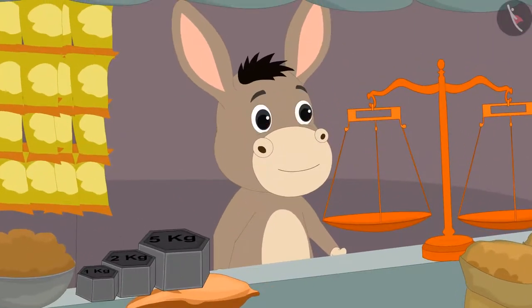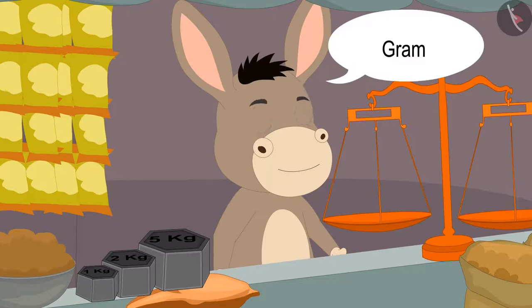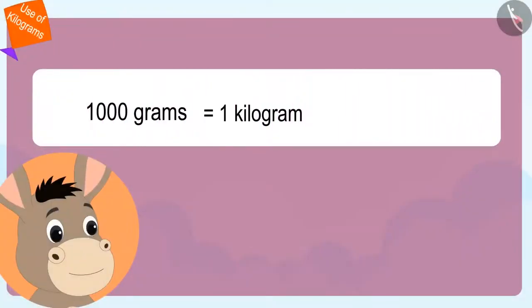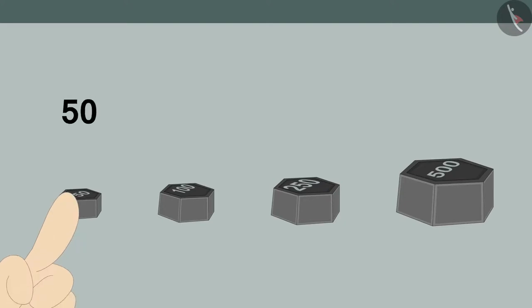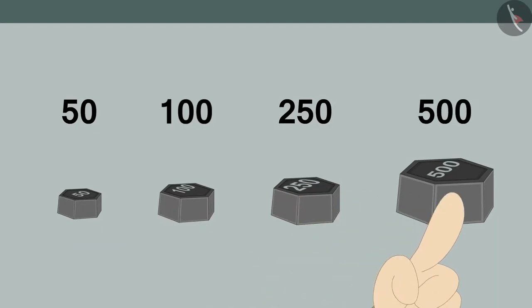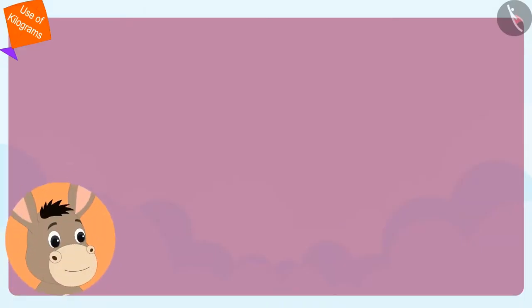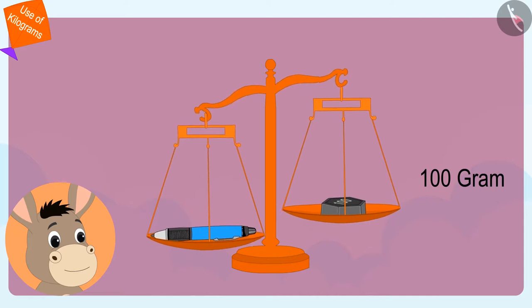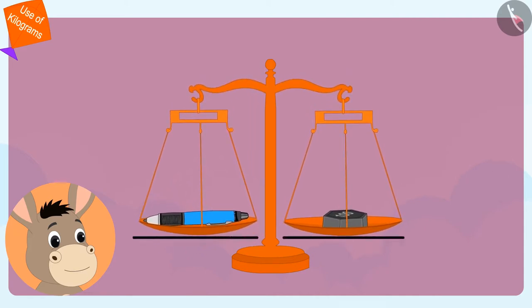Then Bhola told him that if he had to measure the weight of objects weighing less than 1 kg, he could measure the weight of those items using grams. 1 kg is equal to 1000 grams. Bhola showed Appu 50, 100, 250 and 500 grams weights. Then he took the scales from Appu and placed a pen on one side of the scale and 100 grams weights on the other side.